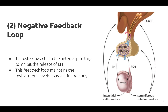A negative feedback system occurs with rising levels of testosterone acting on the hypothalamus and anterior pituitary to inhibit the release of GnRH, FSH, and LH. The Sertoli cells produce the hormone inhibin, which is released into the blood when the sperm count is too high, inhibiting the release of GnRH and FSH, which causes spermatogenesis to slow down. If the sperm count drops to roughly 20 million, the Sertoli cells cease the release of inhibin and the sperm count increases.